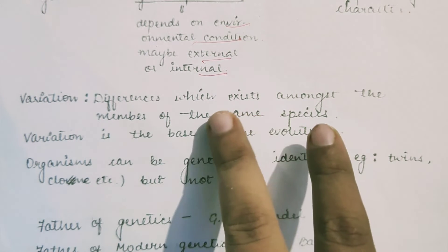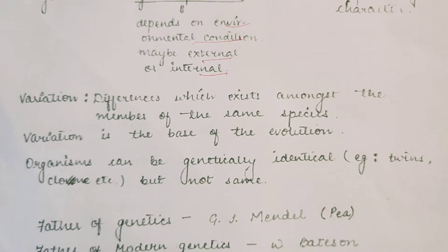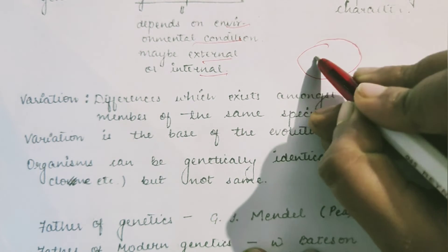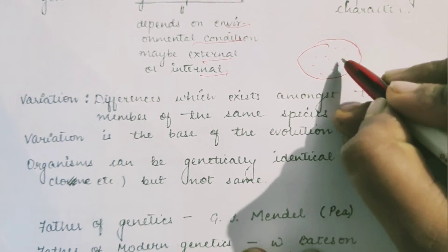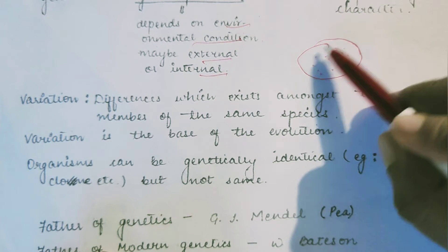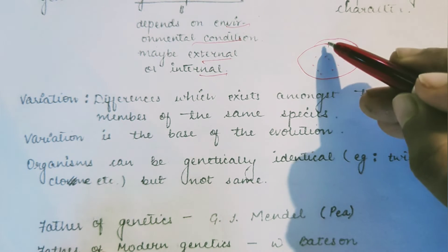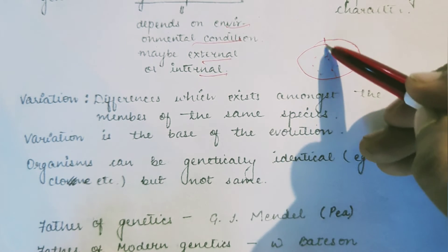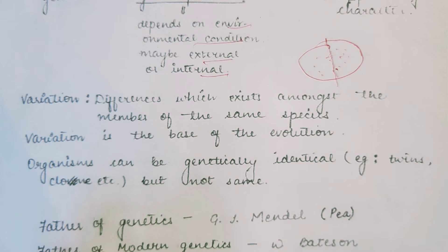Variation refers to differences that exist amongst the members of the same species. Suppose we are living in the same society. Suddenly, environmental variation occurs due to an earthquake and this area is separated into two different areas.